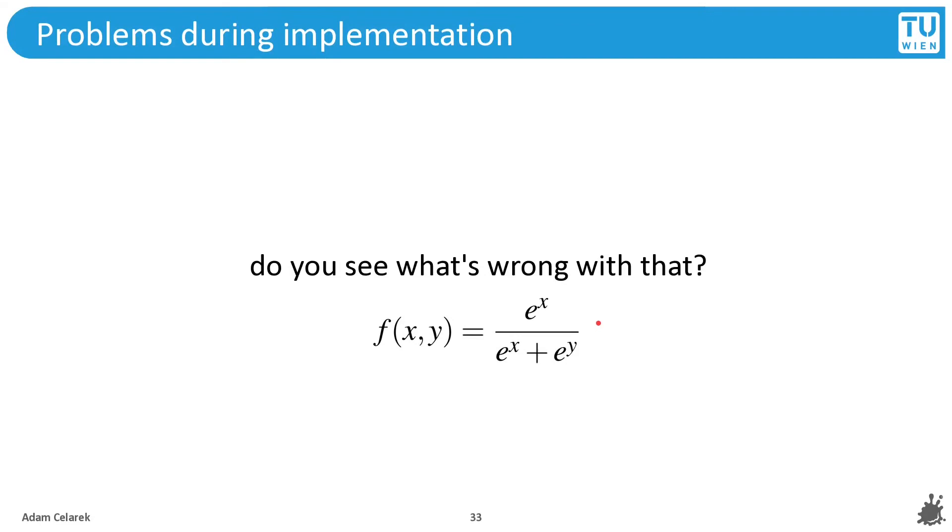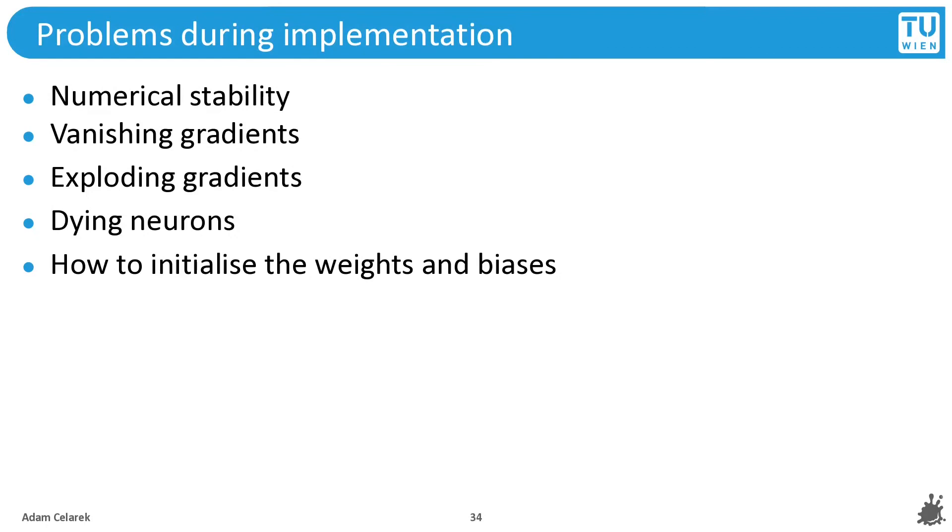This is a typical workaround for a numerical problem, and you can find all of those workarounds on the internet. So just keep in mind. Finally, this is a list of problems that I had during implementing the neural network: I had problems with numerical stability, one of which you already saw. There were vanishing gradients, exploding gradients, dying neurons, and I didn't know how to initialize the weights and biases. Actually, all of those problems were interconnected, so I had to fix all of them kind of in a blind way.